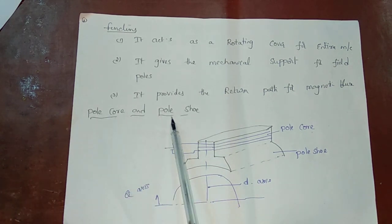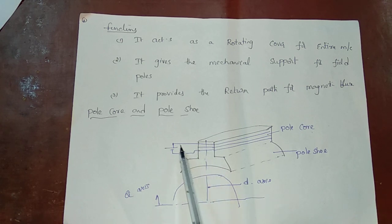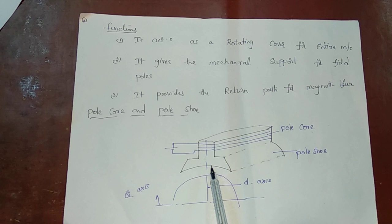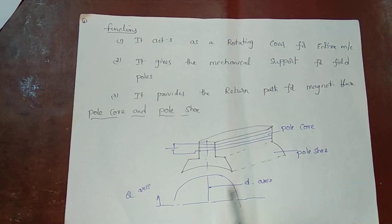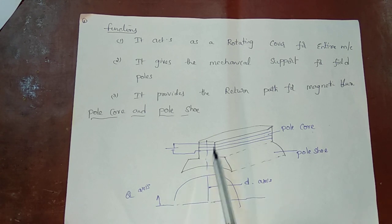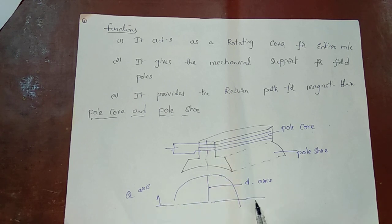Let's look at the pole core and pole shoe. The pole core is used to hold the field coils. DC supply is applied through the armature. The pole core has a direct axis center and a quadrature axis center — these are perpendicular to each other, at 90 degrees.